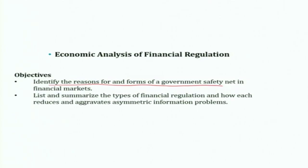We will see that a government safety net is important in financial markets because ensuring a sound financial system is necessary for ensuring a sound economic system. But at the same time, we will also see how a government safety net itself can reduce the efficiency of a financial system. Subsequently, we will list and summarize the types of financial regulation and how each both reduces and aggravates asymmetric problems in the financial market.